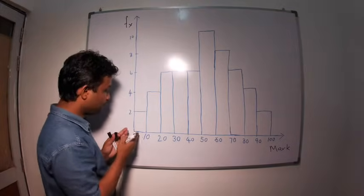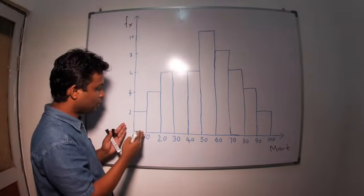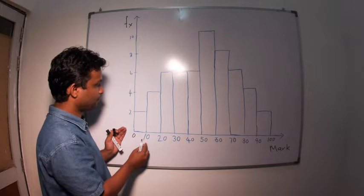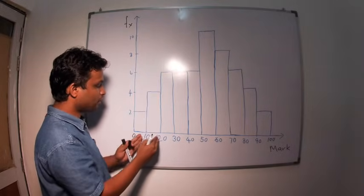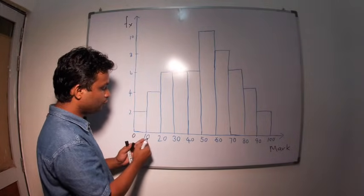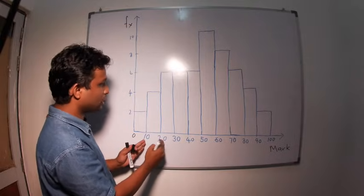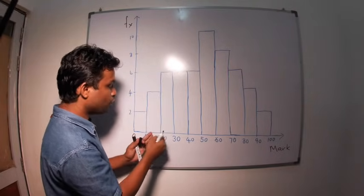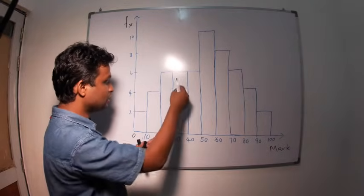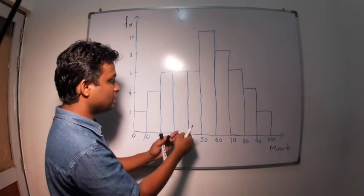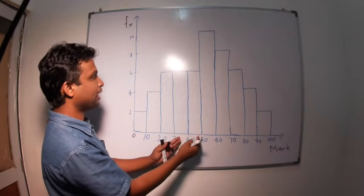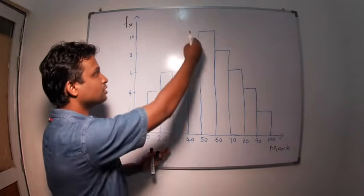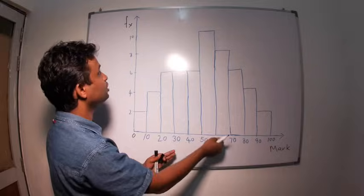There are two students with marks of 0 to 10, 4 students with marks of 10 to 20, 6 students with marks in the range of 20 to 30, 6 students in the range of 30 to 40, and 6 students in the range of 40 to 50.